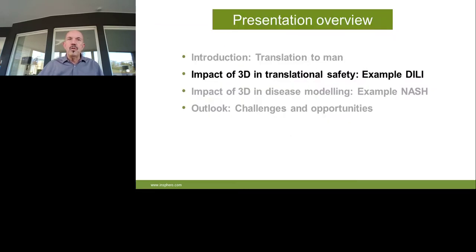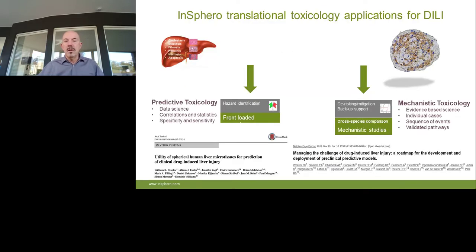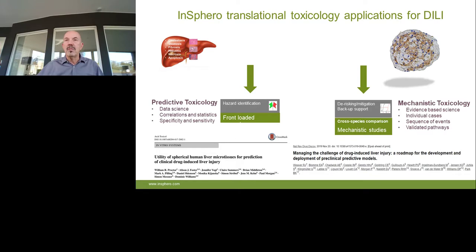Coming now to the translational part, explained based on DILI. There are two major blocks used for DILI investigation. The first is the predictive toxicology part — to identify hazards, screen for DILI-causing compounds at an early phase, and rank them. This is a data science part based on correlations and statistics, delivering some specificity and sensitivity. The second block is the mechanistic part, which is evidence-based science depending on individual cases, determining the sequence of events when a compound induces DILI and validating the pathways.